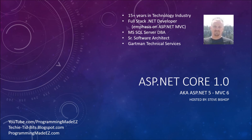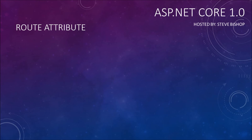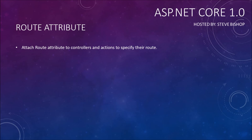Hello everyone and welcome back to ASP.NET Core 1.0. My name is Steve Bishop and in this video we're going to talk about the route attribute. With the route attribute you can attach it to controllers and actions to specify their route. This is an alternative way of specifying how to get to a particular action or controller without using the templates set up in the startup class.